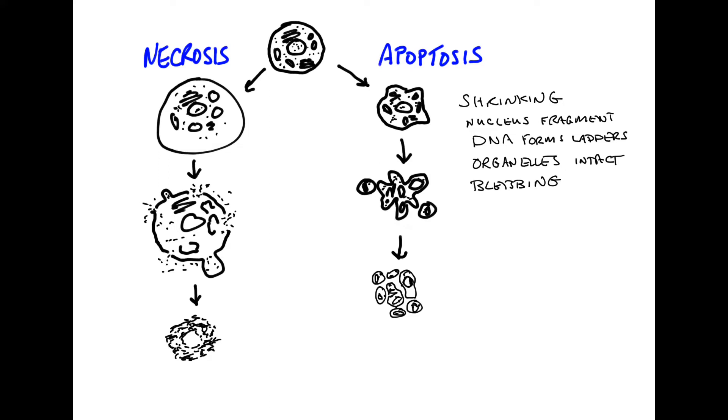The way it's recycled is by a phagocytic cell coming along and eating it. These things that are being eaten from the original cell that underwent programmed cell death are referred to as apoptotic bodies, and they are essentially what's left of the cell before it gets eaten and its contents recycled.